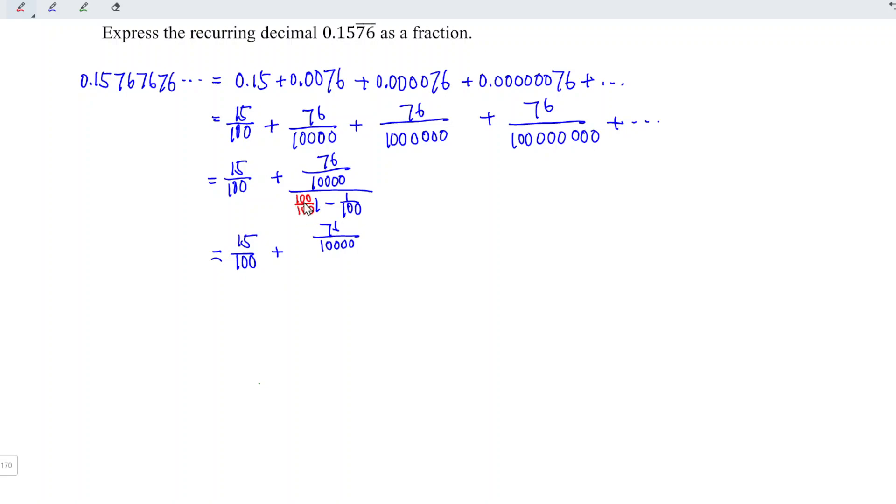So 100 minus 1 equals 99, and we divide by 100. Now this is in the form of A over B divided by C over D.